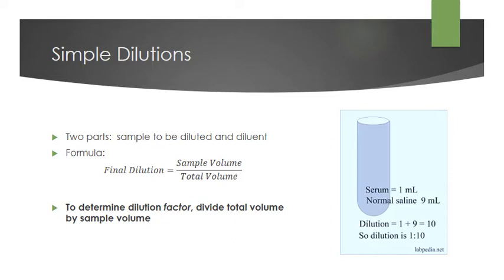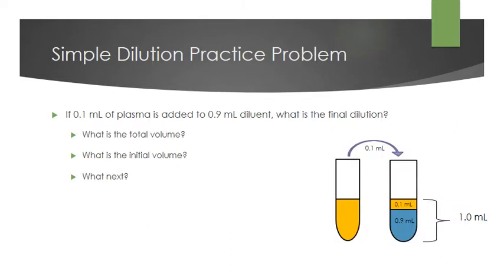For our first simple dilution practice problem, we have 0.1 milliliters of plasma added to 0.9 milliliters of diluent. We want to know what is the final dilution. Some students are forgetting to calculate the total volume and instead dividing the initial sample volume by the diluent volume — that's going to give you the incorrect dilution. You always want to make sure that you are finding your total volume.